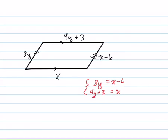Since this is already set up where I've got x by itself, I'm going to use substitution, which is just taking 4y plus 3, which equals x, and plugging it into the other equation for x.